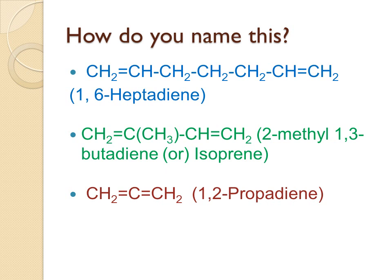Let us do an exercise on nomenclature of dienes. The first compound has 7 carbon atoms with double bonds at carbon 1 and carbon 6, so it is 1,6-heptadiene — an isolated diene. The second compound, CH2=C(CH3)-CH=CH2, has a methyl group at the second carbon with double bonds at carbon 1 and carbon 3, so it is 2-methyl-1,3-butadiene, with the common name isoprene. The third example, CH2=C=CH2, has 3 carbon atoms with double bonds at carbon 1 and carbon 2, so it is 1,2-propadiene.